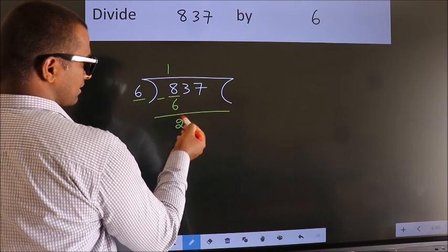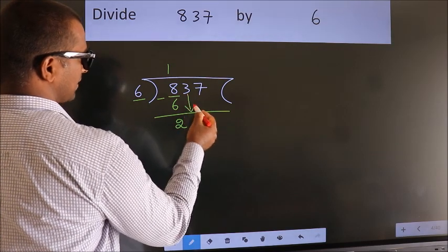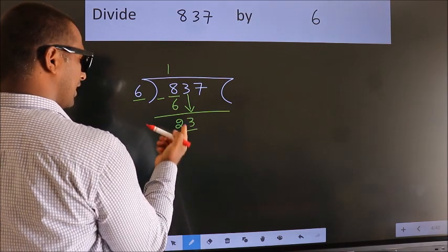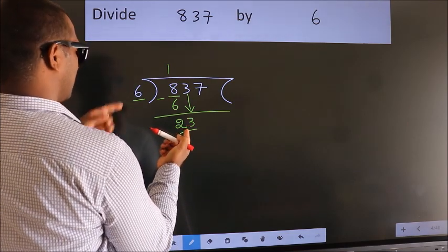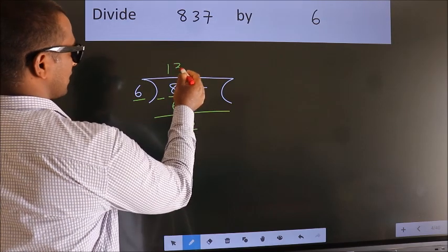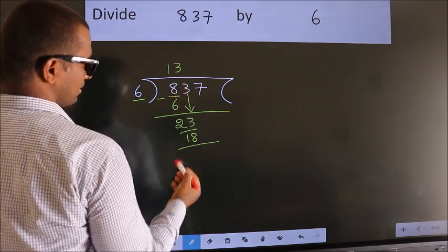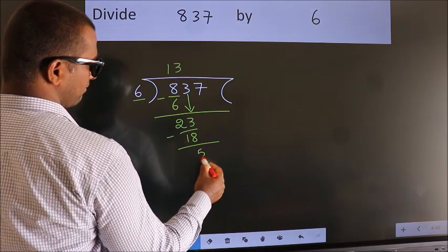After this, bring down the next number. So, 3 down, making 23. A number close to 23 in the 6 table is 6 times 3 is 18. Now we subtract. We get 5.